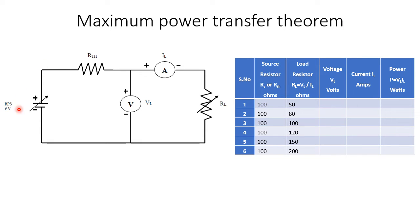This is the circuit diagram for the maximum power transfer theorem. In the circuit diagram, we have a 9 volt power source, Thevenin's resistance, and a load resistance which is variable. To measure voltage, we have a voltmeter, and to measure current, we have an ammeter.